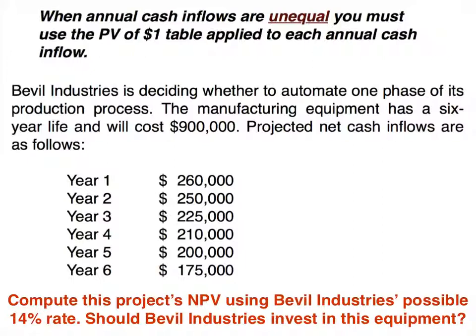Bevel Industries is deciding whether to automate one phase of its production process. The manufacturing equipment has a six-year life and will cost $900,000. The projected net cash inflows for years one through six are all differing amounts. We need to compute the project's net present value using Bevel Industries' possible 14% rate and determine whether they should invest in this equipment.